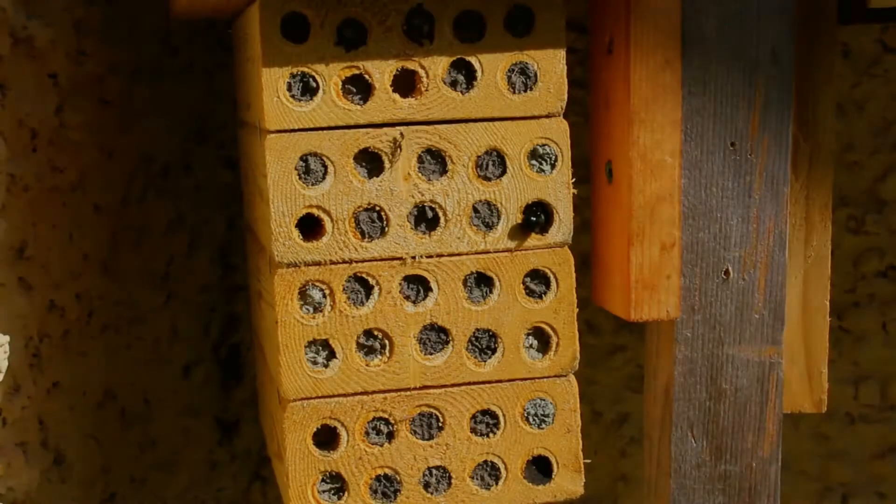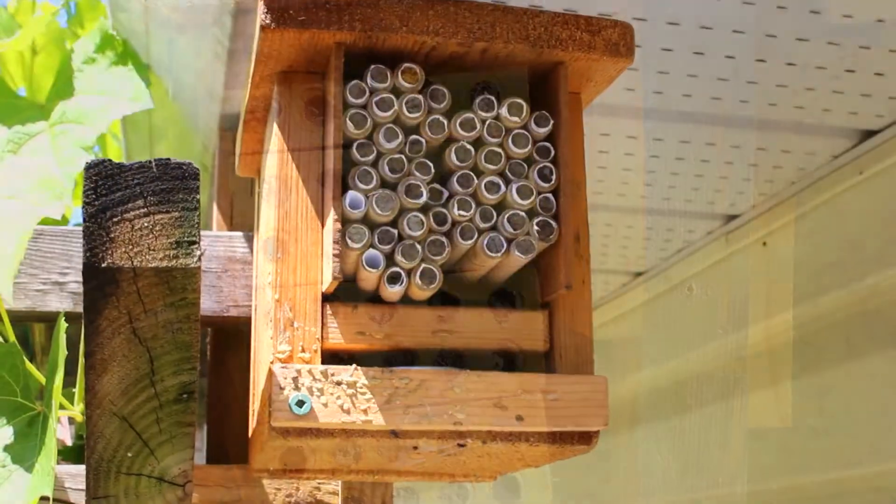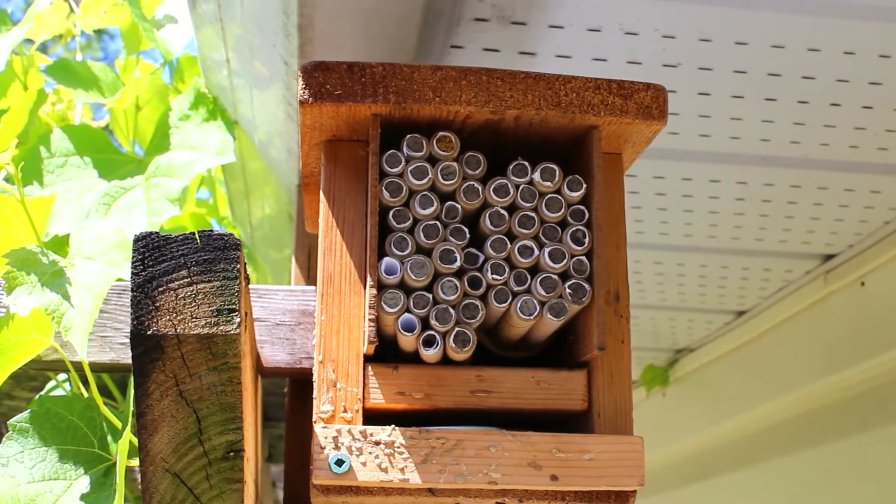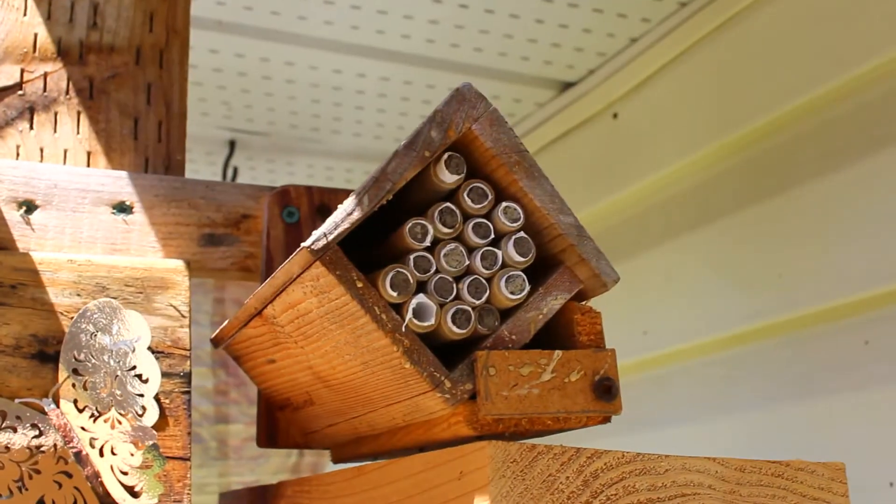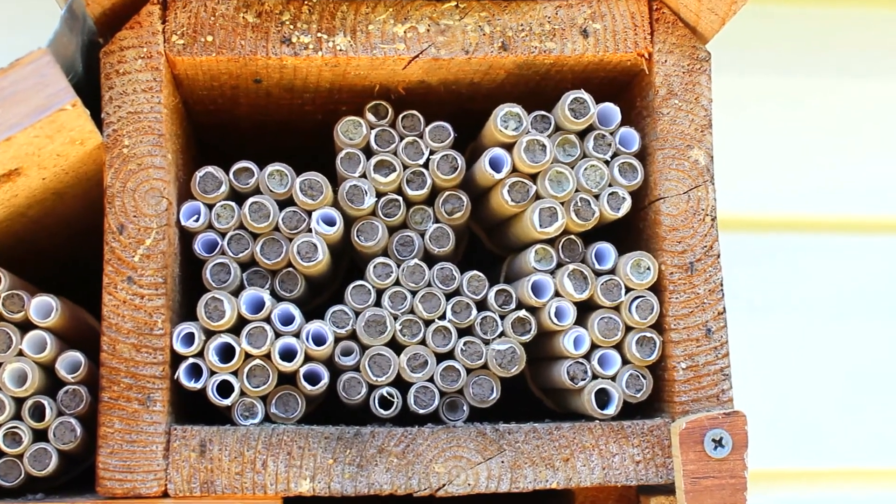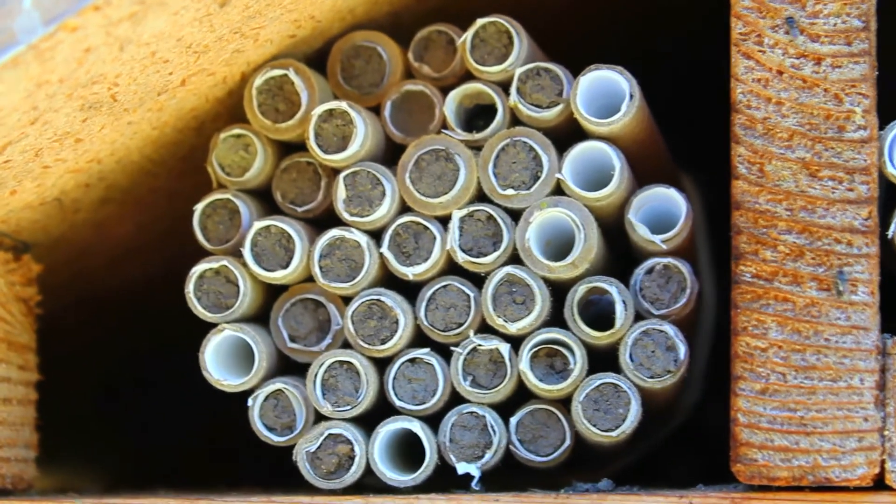With the tube sealed, the bee will now search for another cavity to begin another cell collection. Each female bee will lay approximately 25 to 30 eggs during the nesting season. This will be done over the course of several weeks with the bee laying one to two eggs per day.